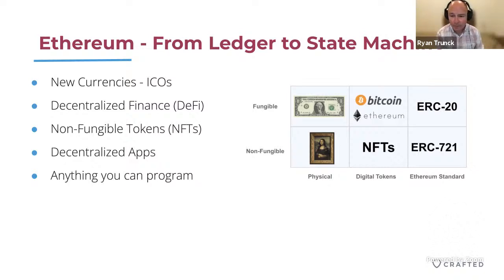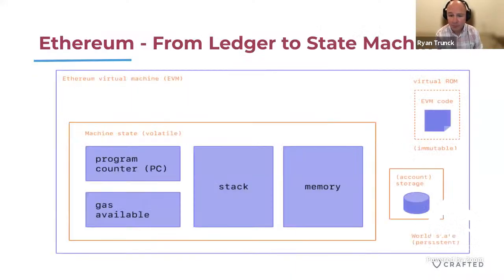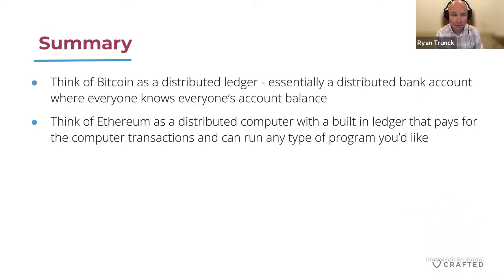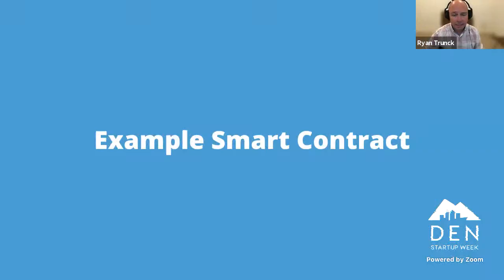On top of decentralized apps, it's really anything you can program — that's the cool thing about it being a distributed peer-to-peer decentralized computer that we can all program, and then it lives on to eternity because of the blockchain. There's a virtual machine you program on and persisted storage. To do a quick summary: Bitcoin is basically a distributed ledger — a distributed bank account where everyone knows everyone's account balance and verifies transactions. Think of Ethereum as a distributed computer with a built-in ledger that you use to pay for computer transactions, and you can build whatever you want.